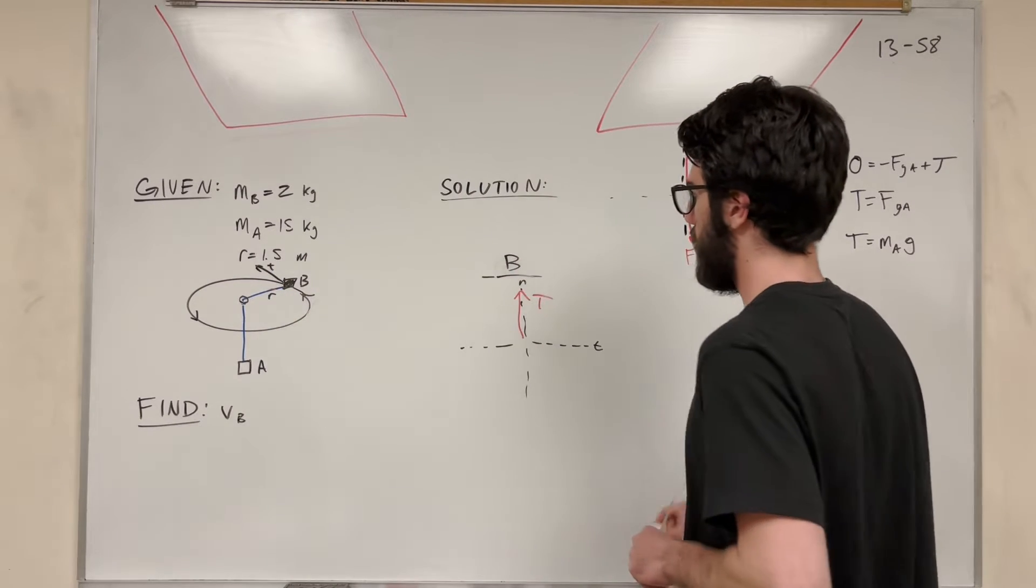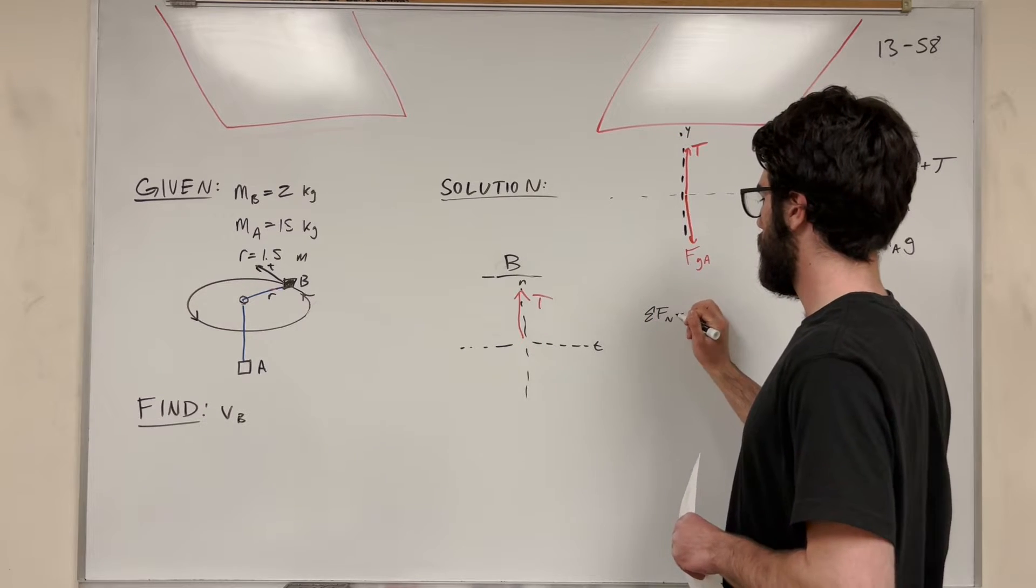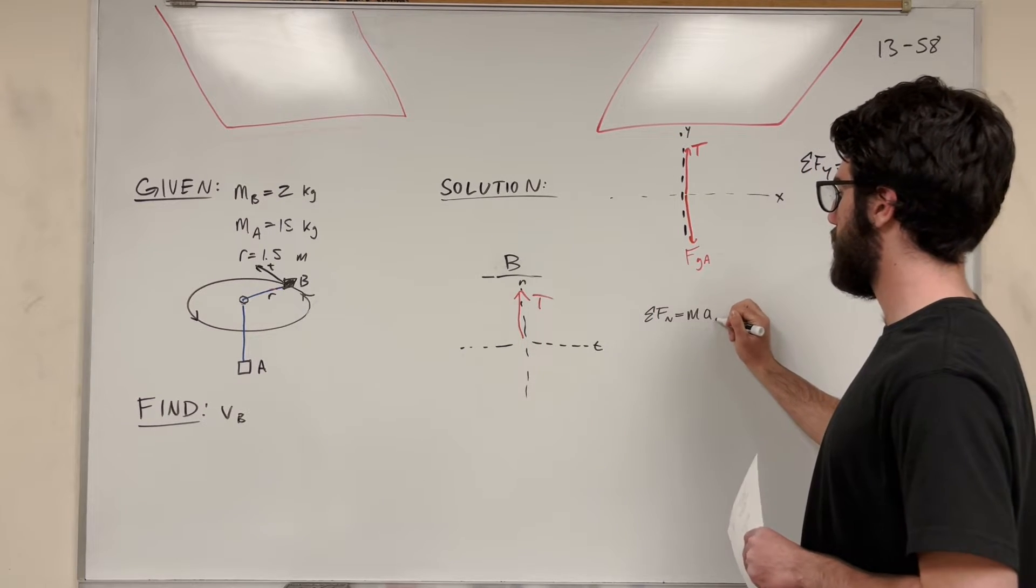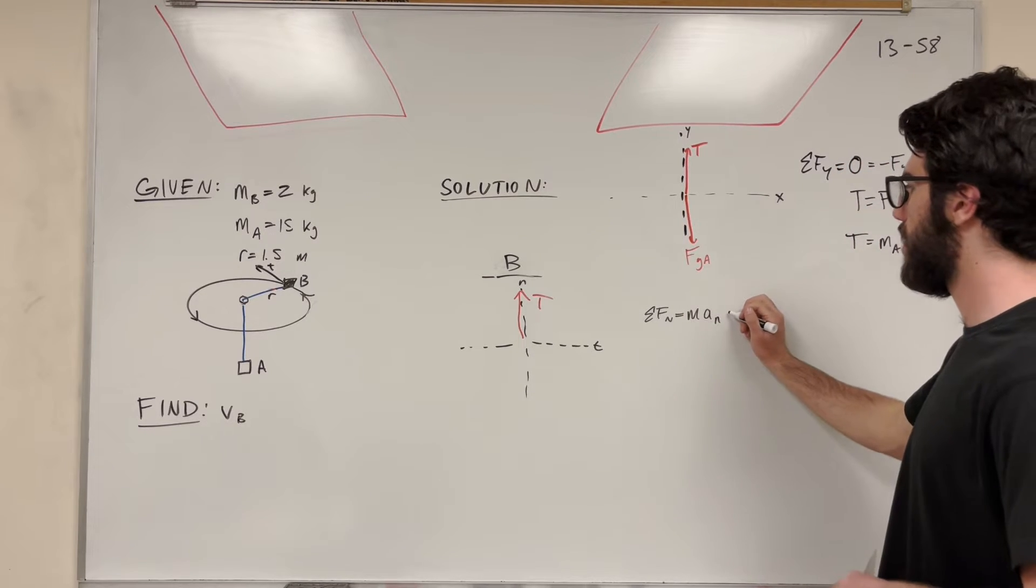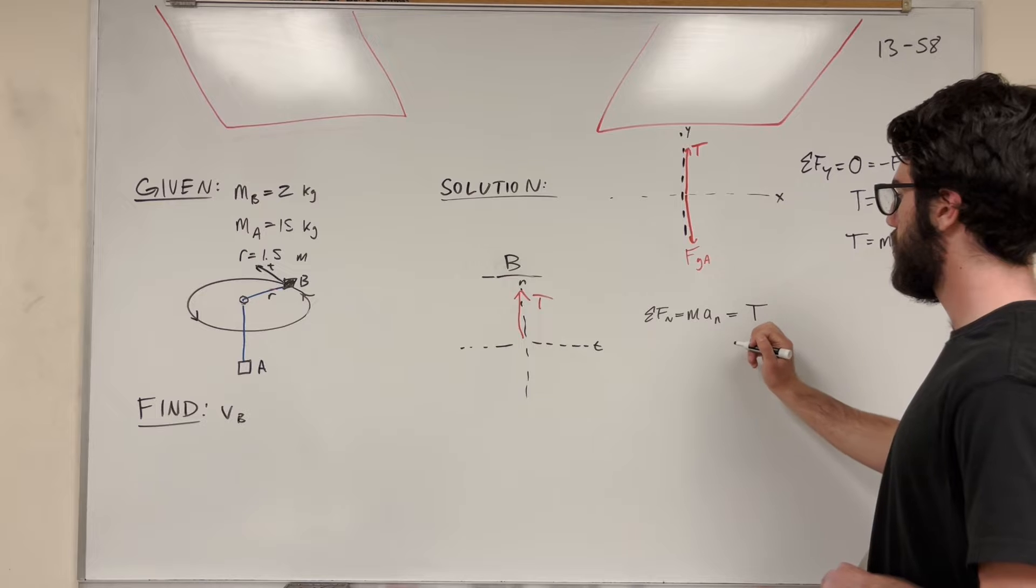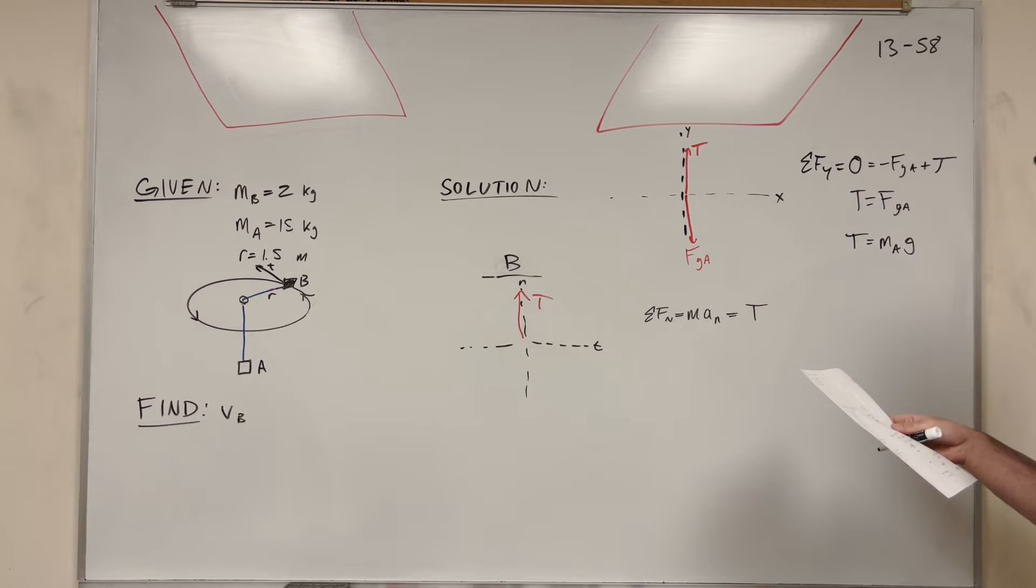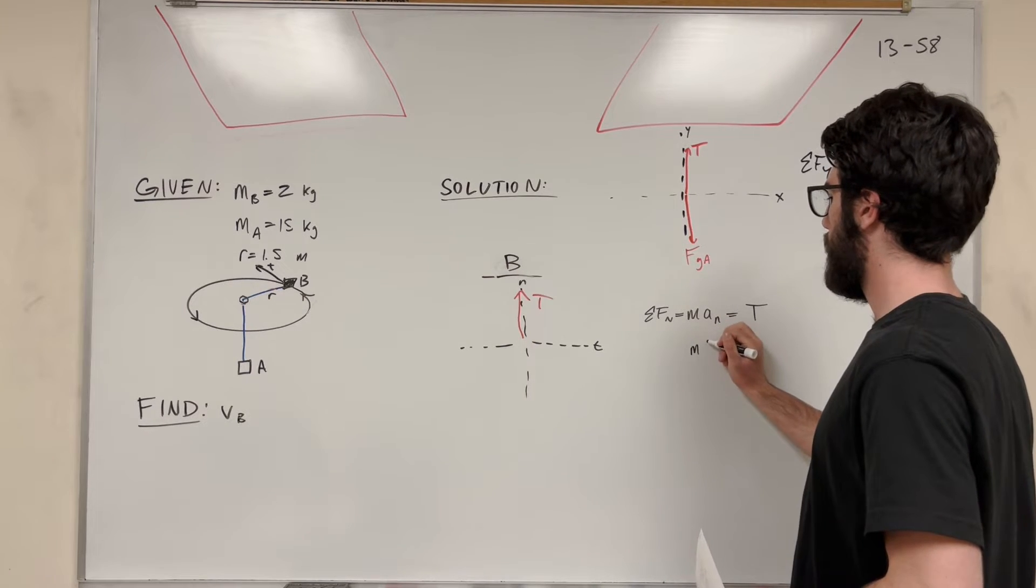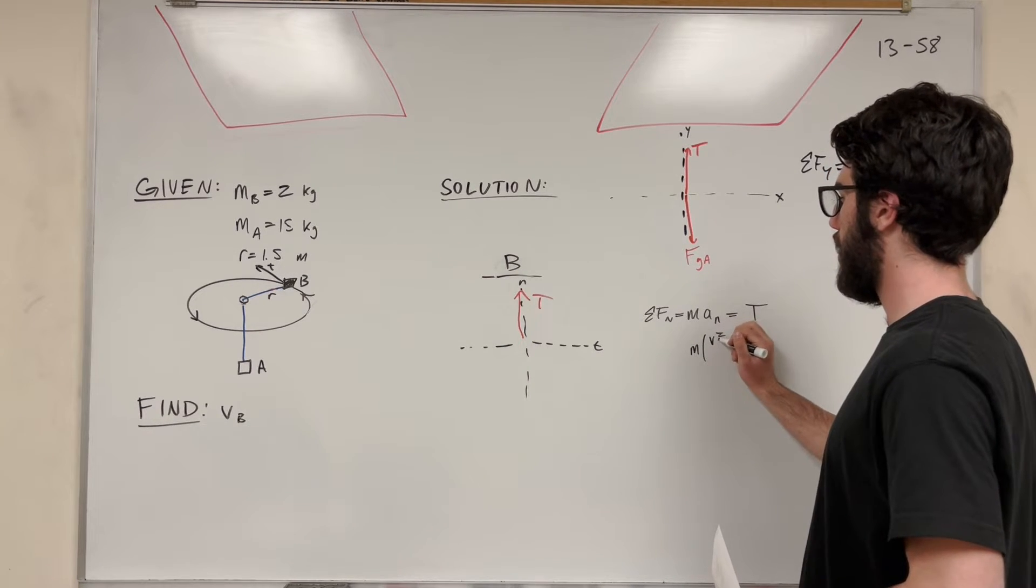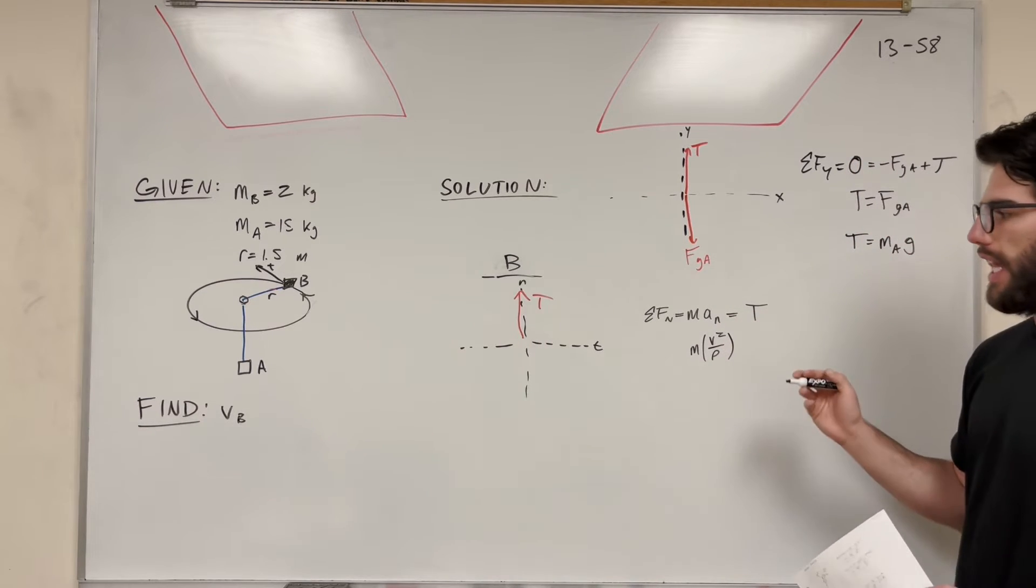But now, when we set sum of the forces in the normal direction, we need to set it to mass times acceleration in the normal direction. And acceleration in the normal direction allows us to find velocity. So if we do this, it's equal to tension. So what do we do next? Well, if we go ahead and we keep mass the same, now acceleration normal is velocity squared over the radius of curvature. Right now, that's where velocity comes in. That's why we're doing this.